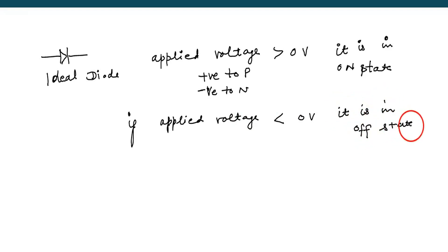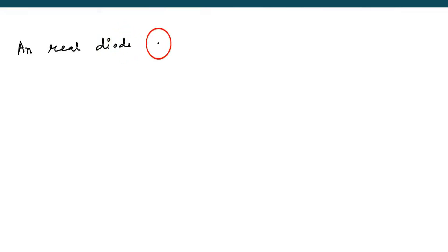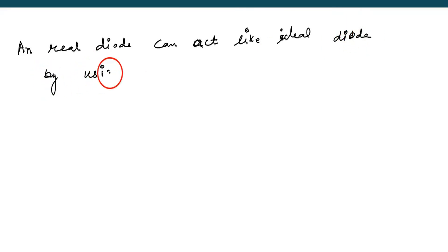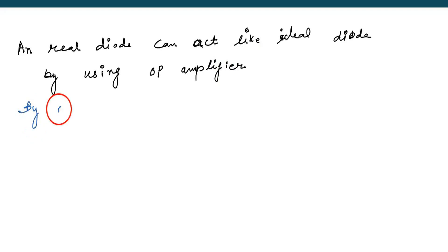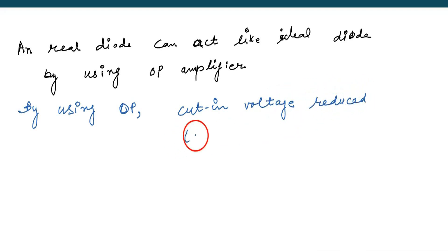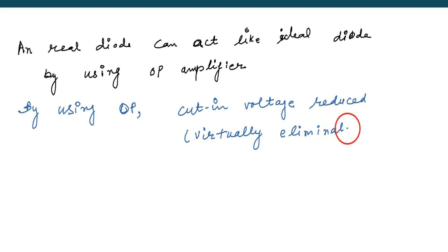A real diode can act like the ideal one if we use an op-amplifier. By using an op-amplifier, the cut-in voltage gets reduced very much — it is reduced so much that virtually it is eliminated. There is no cut-in voltage now.